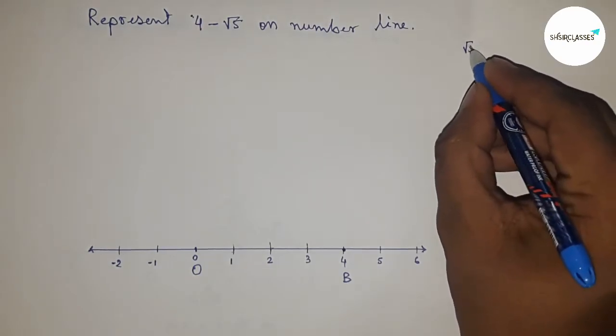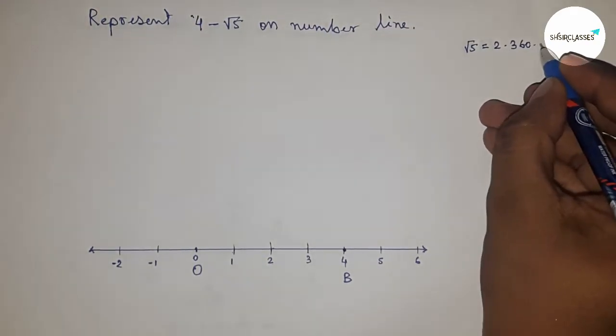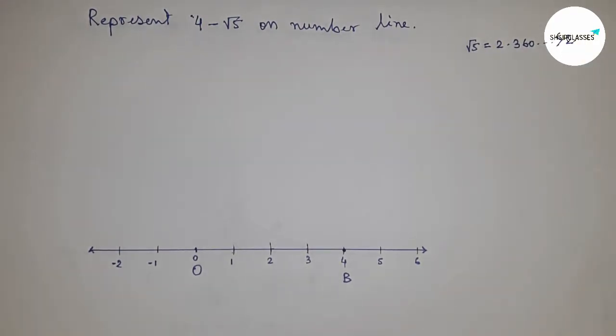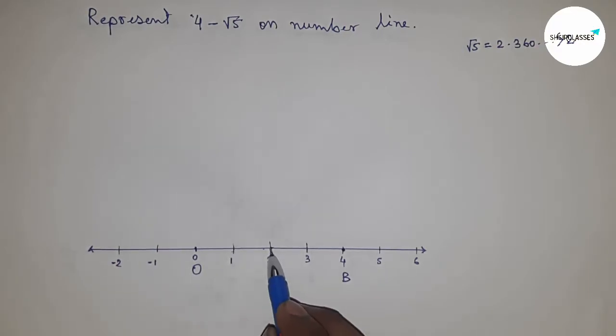Next, we have to subtract root 5 from 4. Root 5 equals 2.360, which means it's greater than 2. So first construct root 5 between 2 and 4, and if we subtract root 5, then we can get 4 minus root 5.